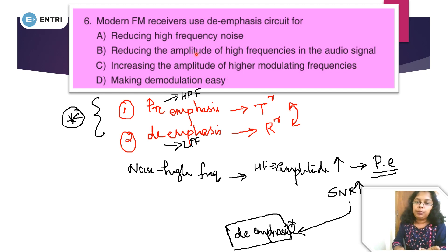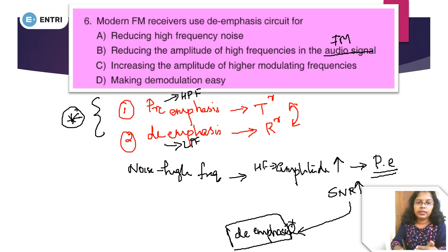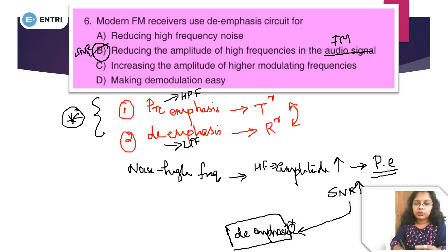De-emphasis involves reducing the amplitude of high frequencies in the audio signal. The audio signal here is the FM signal — a frequency modulated audio signal where the amplitude of high frequencies is reduced.